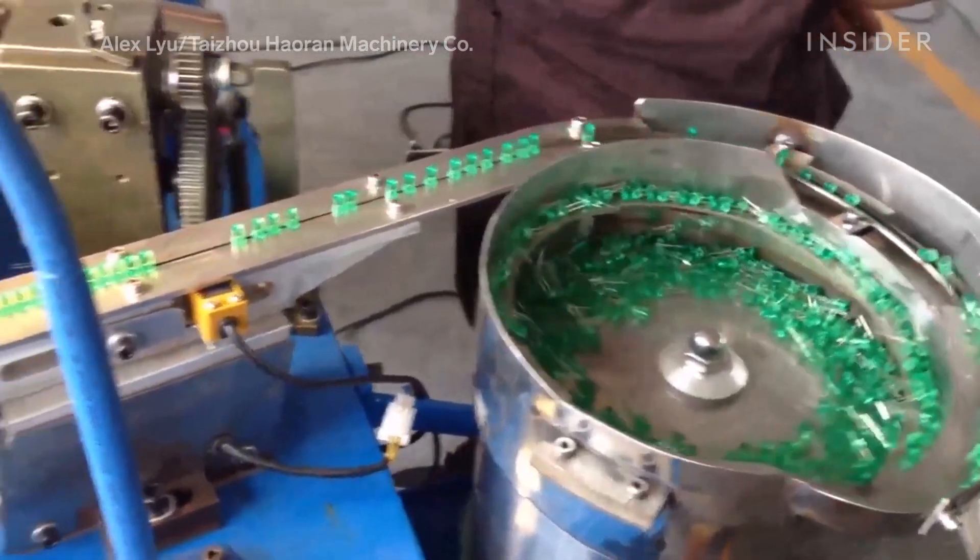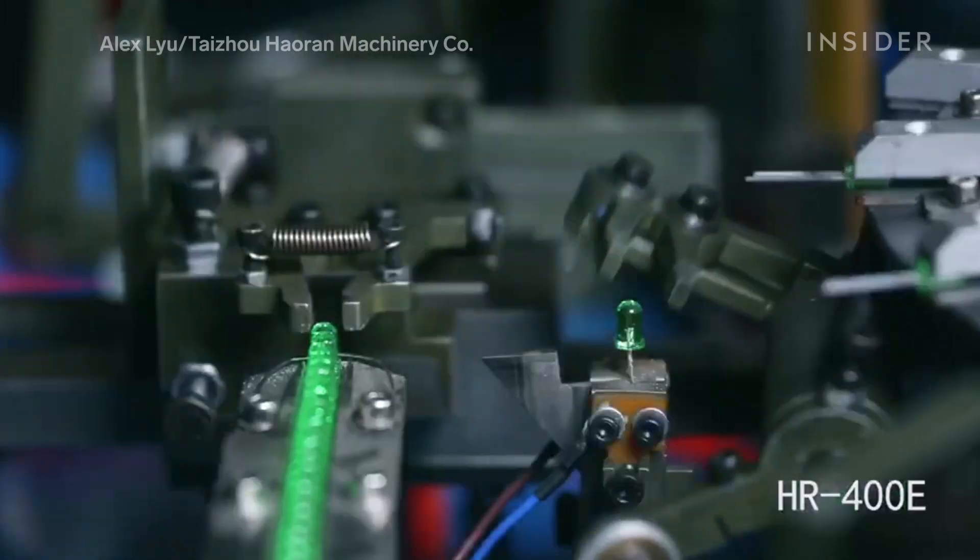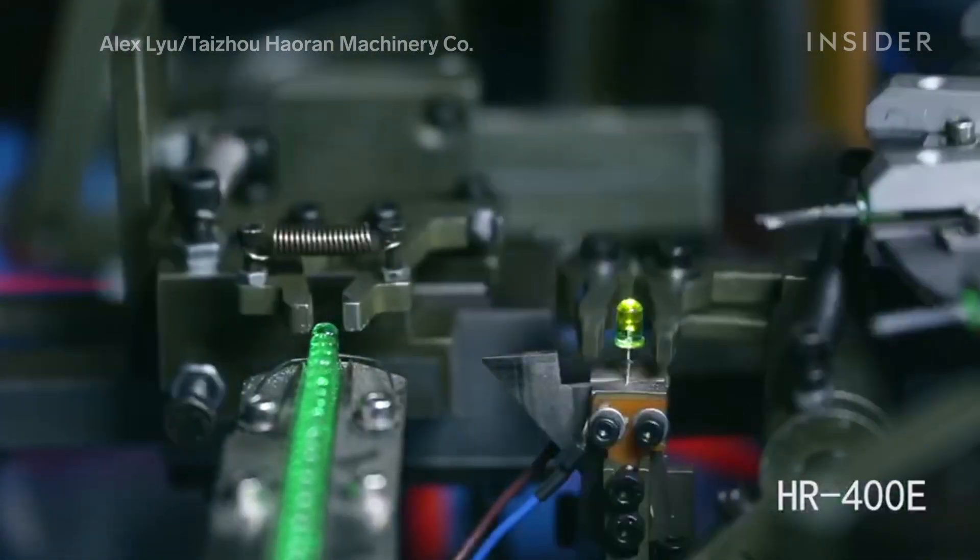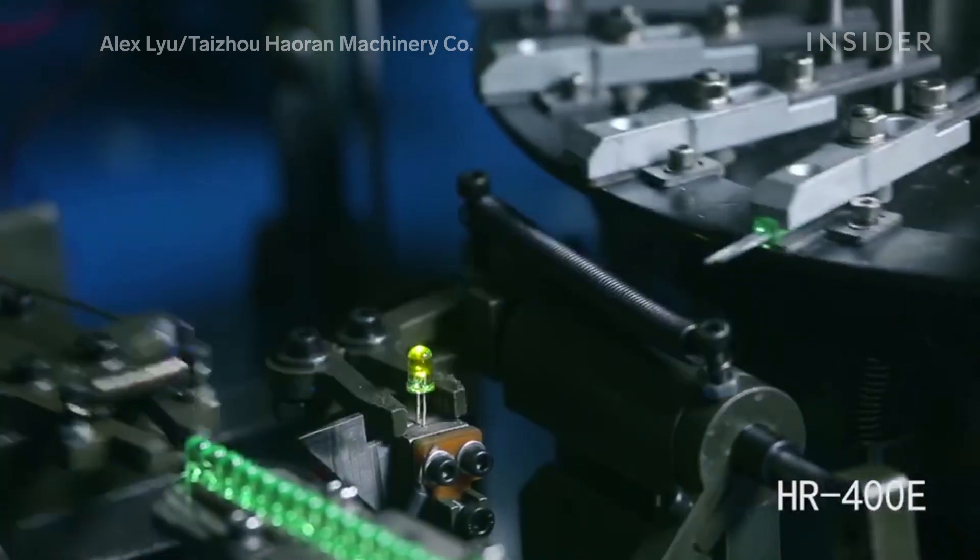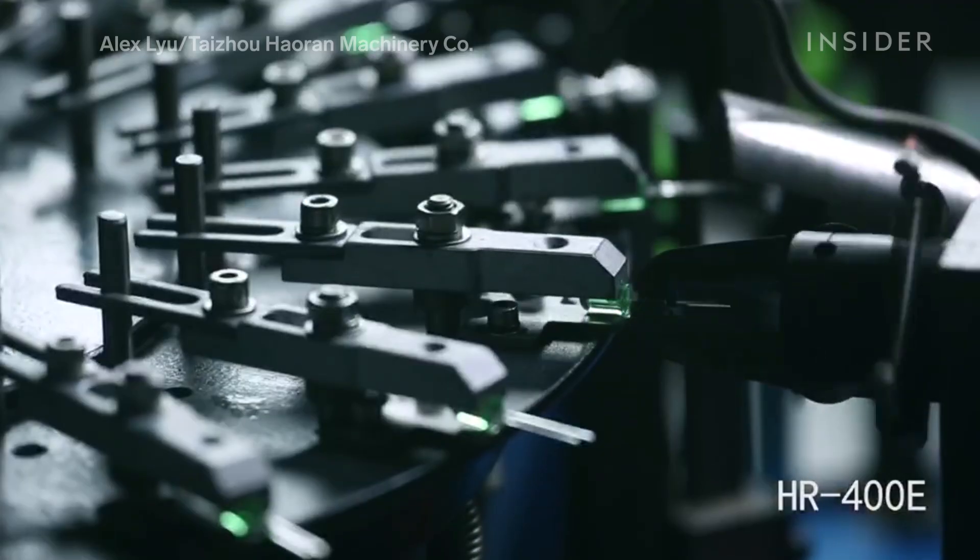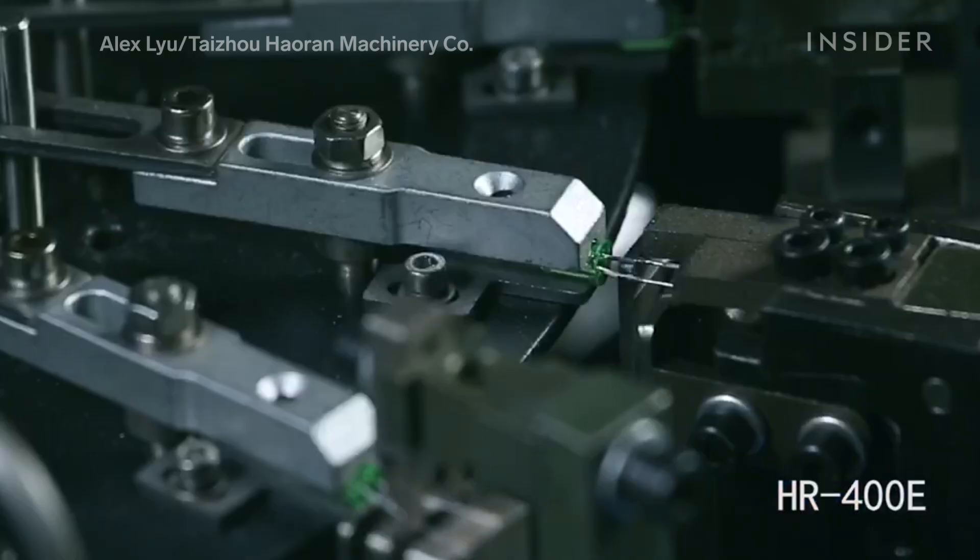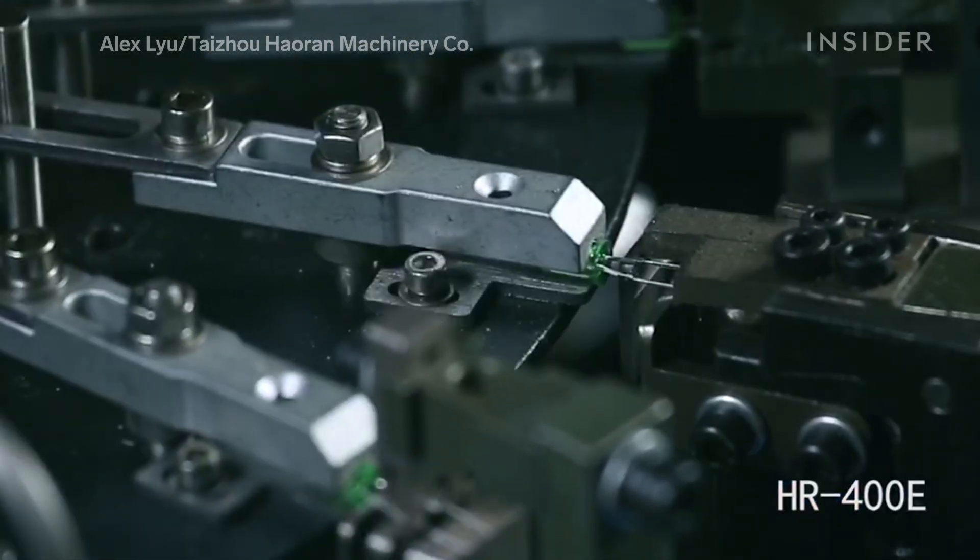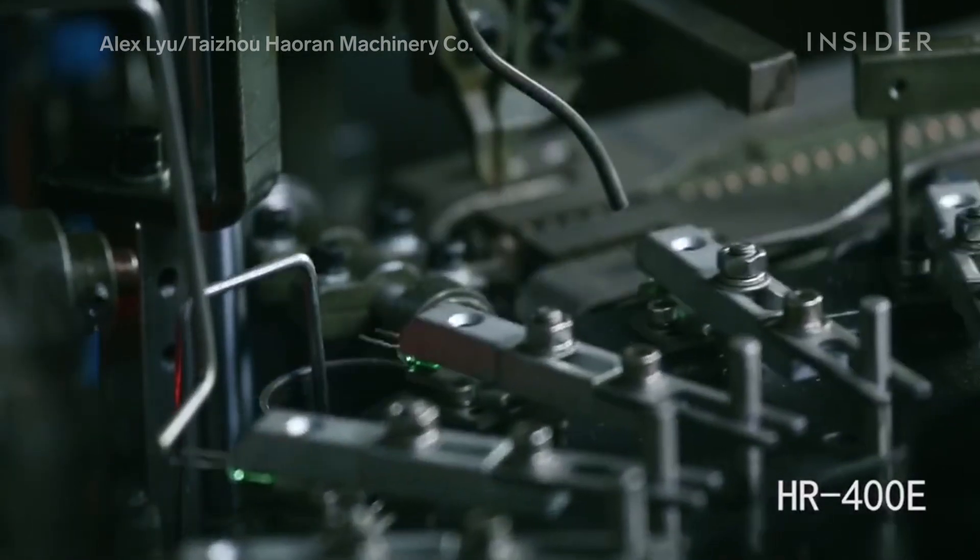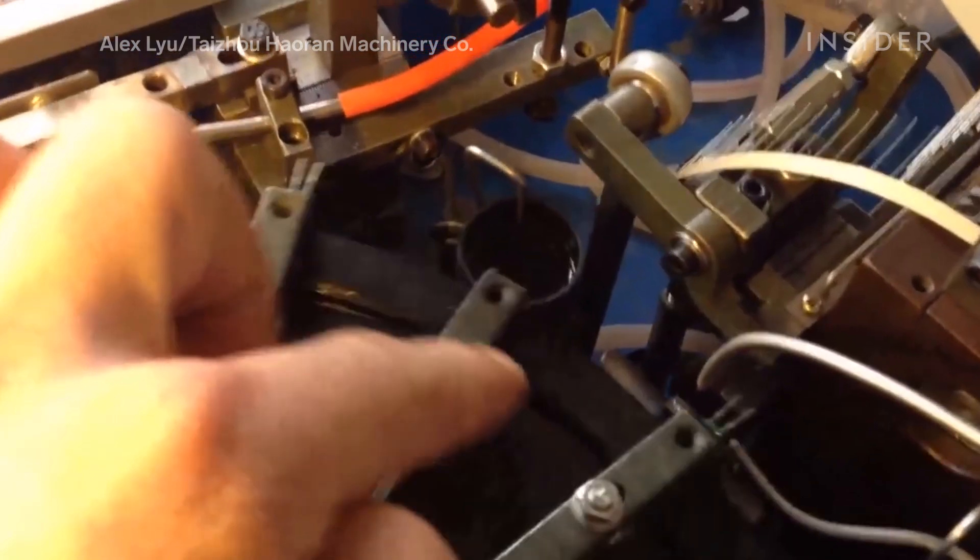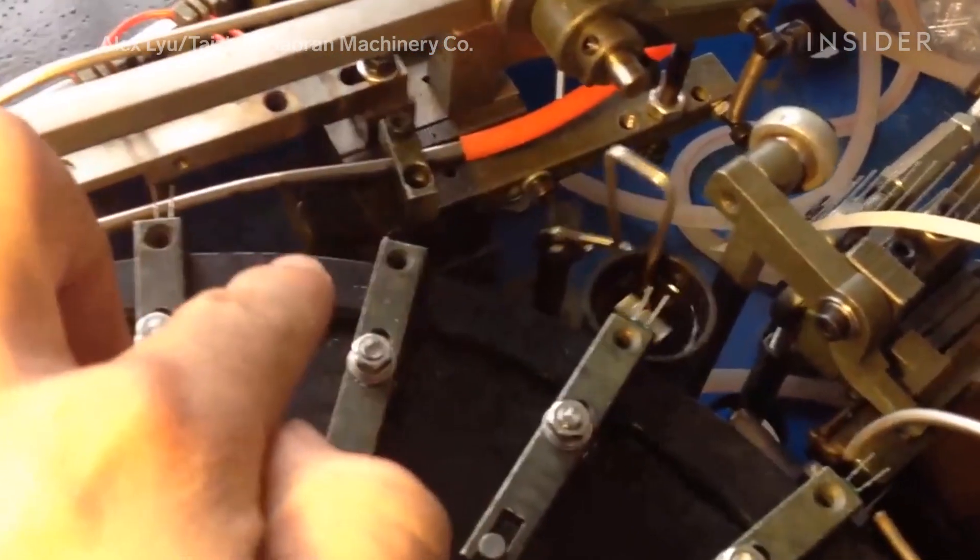They're fed into the machine and tested for positive or negative charges. Then the metal ends of the lights are cut and shaped. Like the string, the LED light bulbs are also dipped in flux.